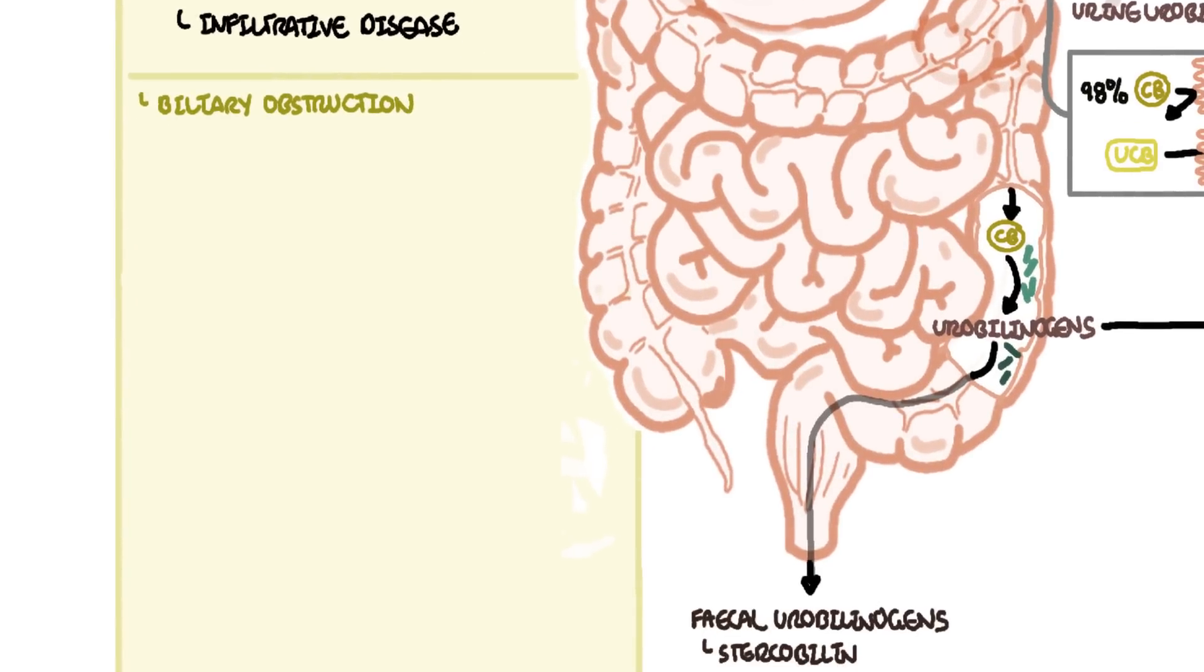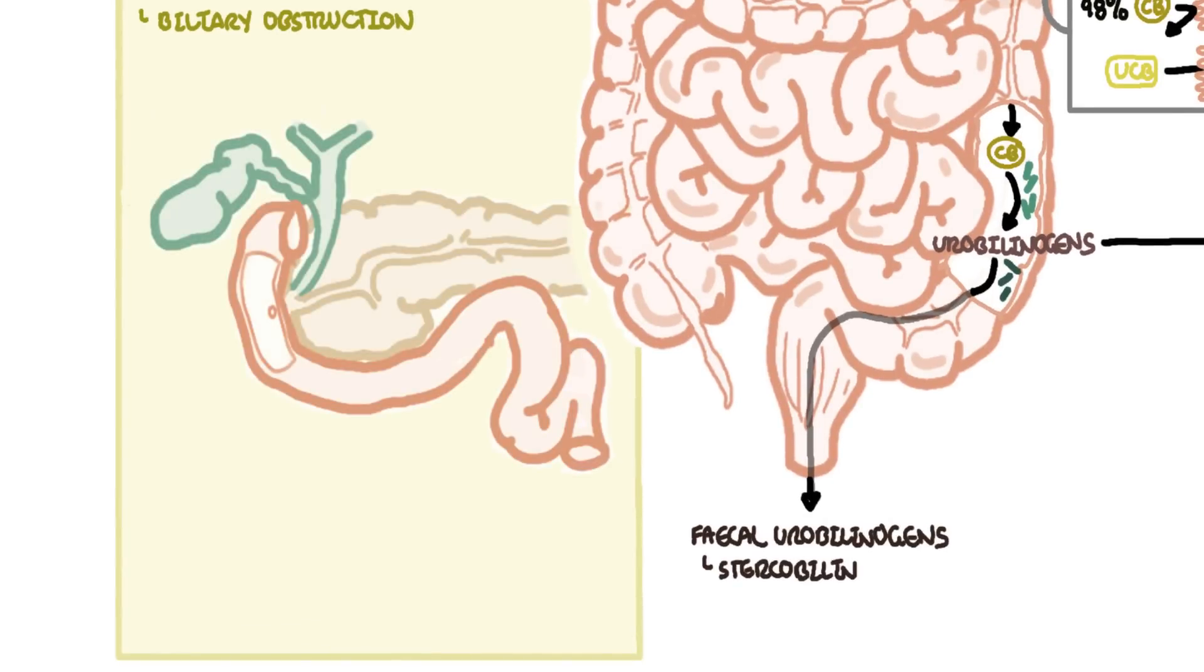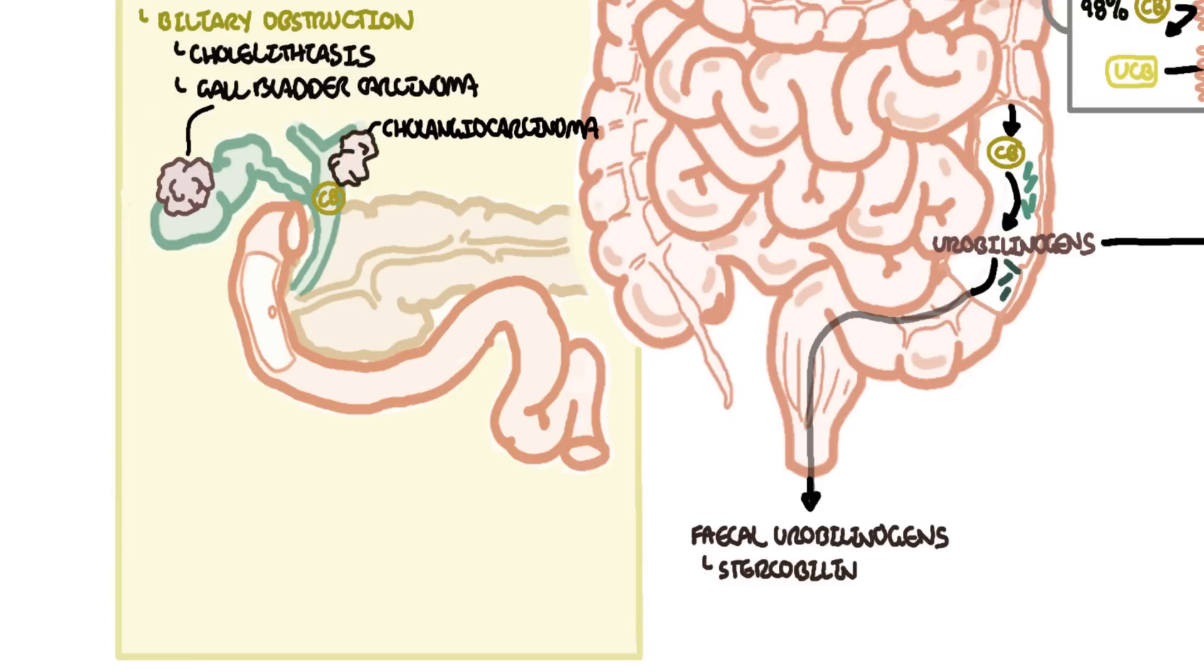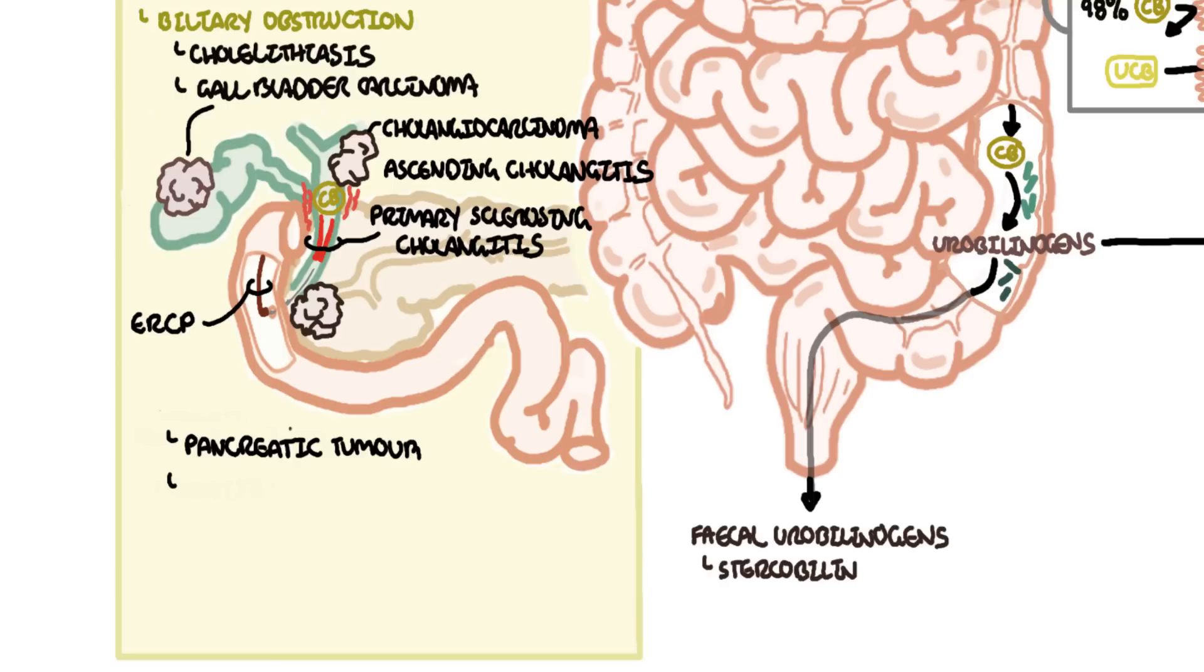The other group that causes high amounts of conjugated bilirubin includes biliary obstruction, also known as post-hepatic causes. This includes cholelithiasis, gallbladder adenocarcinoma, biliary cholangiocarcinoma, ascending cholangitis which is an infection of the bile duct, primary sclerosing cholangitis, strictures after an invasive procedure such as ERCP, pancreatic cancer, some parasitic infections, lymphoma, AIDS cholangiopathy, and acute and chronic pancreatitis, which is a very important cause.